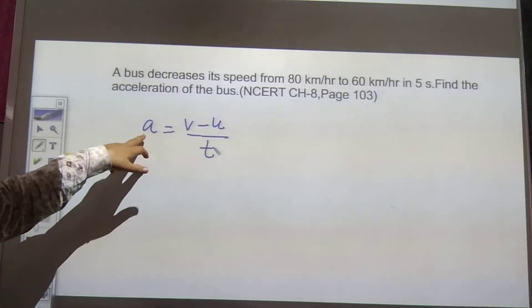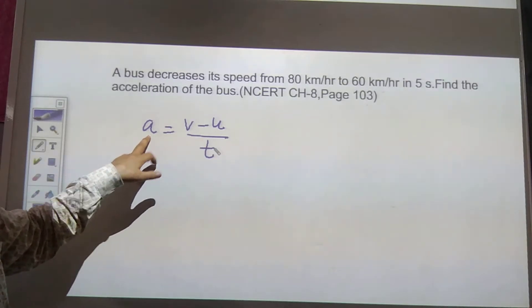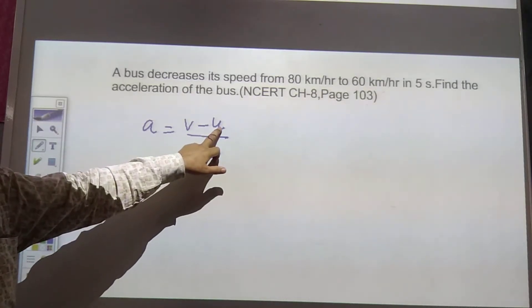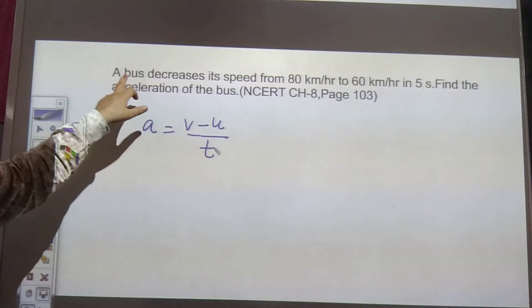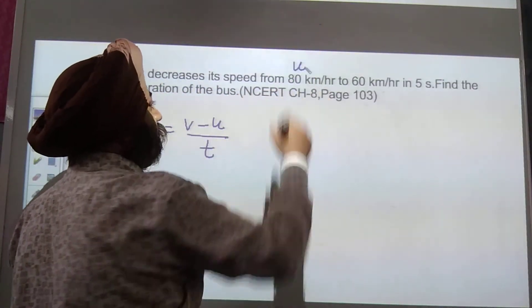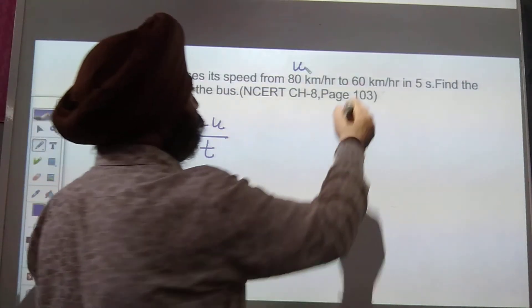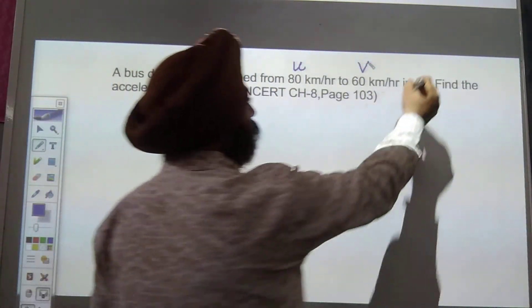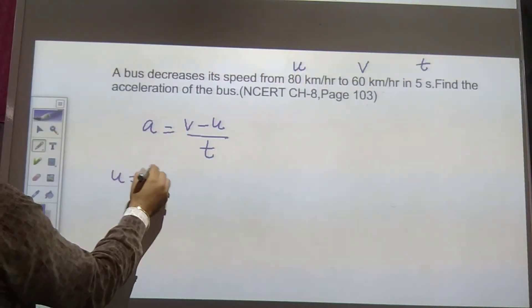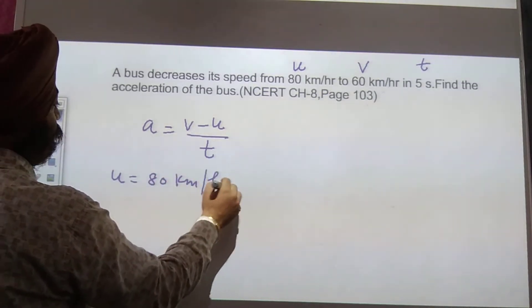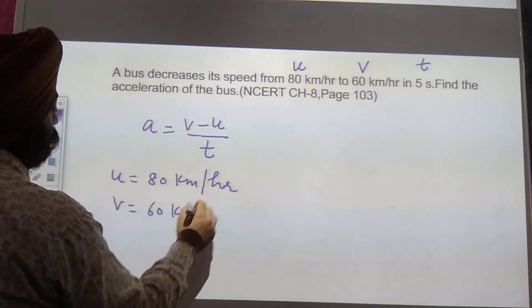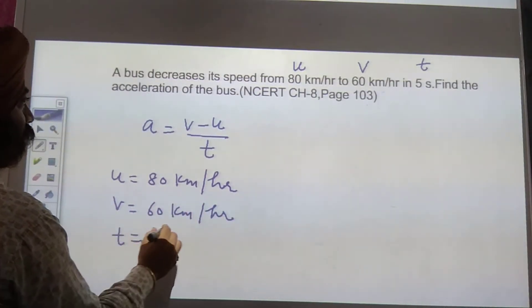As we have discussed, the formula for acceleration is v minus u upon t. Now, v is final velocity, u is initial velocity, and t is time taken. Now in this question, initial velocity of the bus is 80 km per hour and final velocity of the bus is 60 km per hour, and time is 5 seconds. So u is 80 km per hour, v is 60 km per hour, and time is 5 seconds.